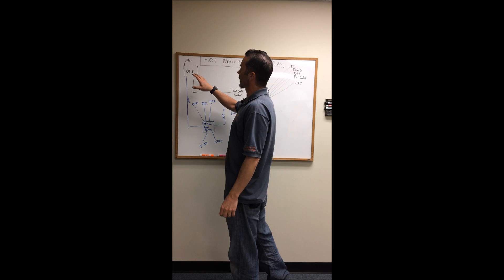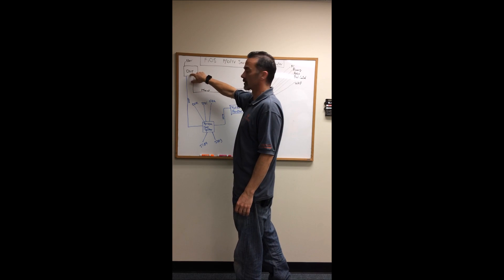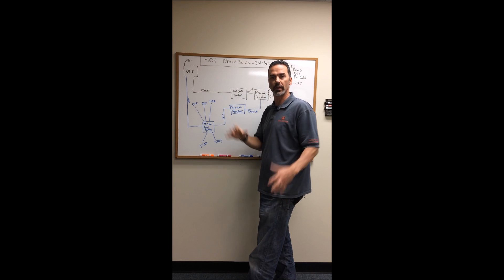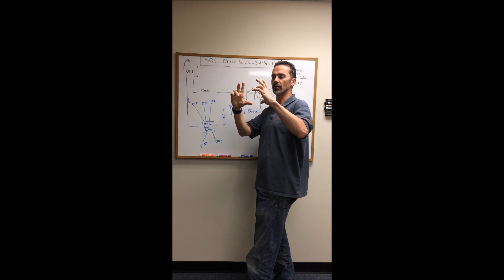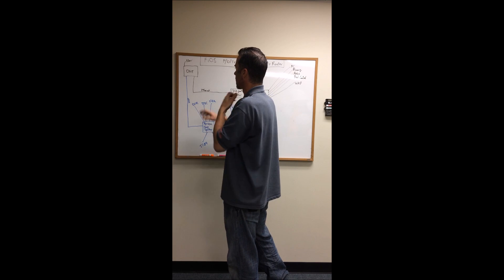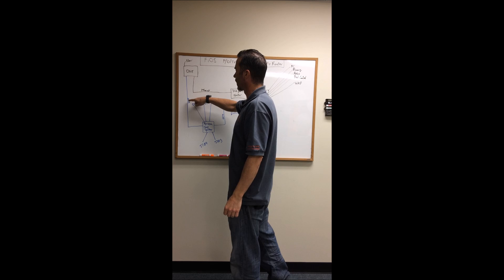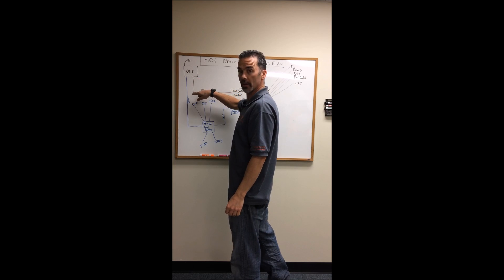So all Verizon Fios systems have what's called an ONT which is going to be somewhere on the outside of your house. It's going to be anywhere from a big box to a tiny little modem sized box on the inside of your house and it's going to have two outputs coming from it.